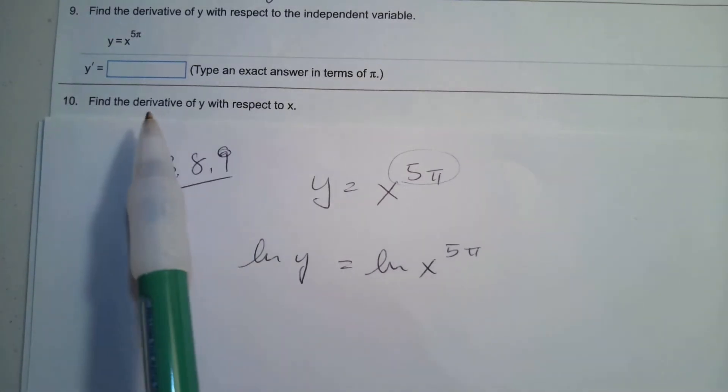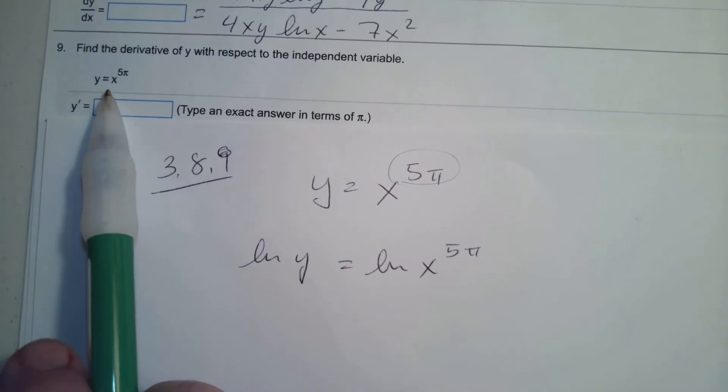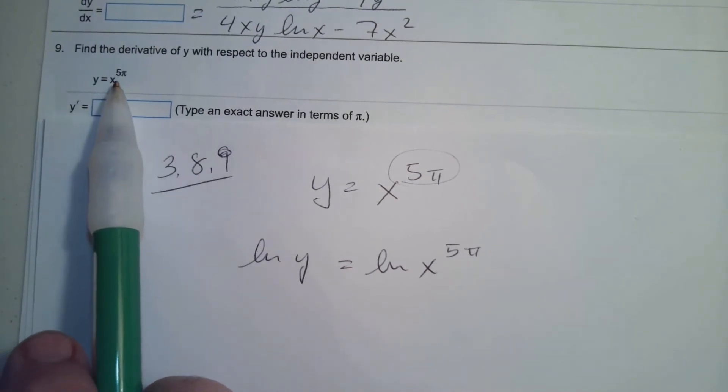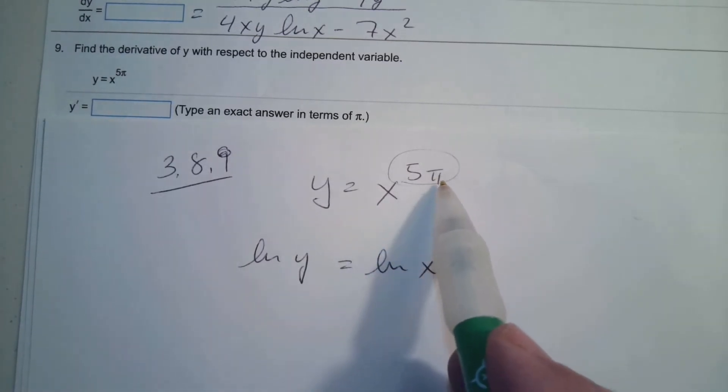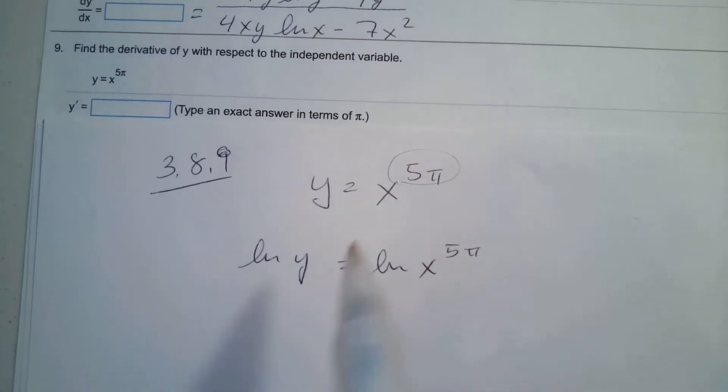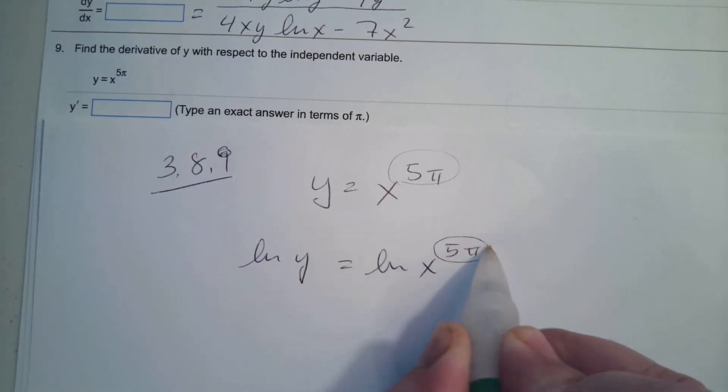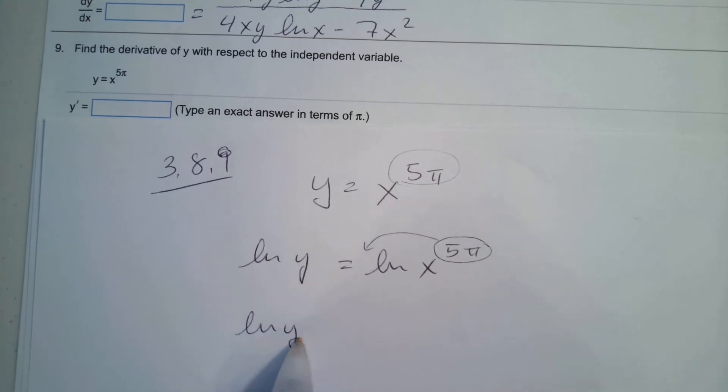It says find the derivative of this function, y equals x to the power of 5π. Here we have a coefficient of an exponent on a variable we need, so we have to get those down. So we take the ln of both sides. So this exponent comes out in front. So we have ln y equals 5π ln x.